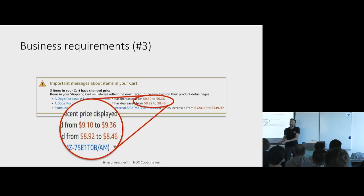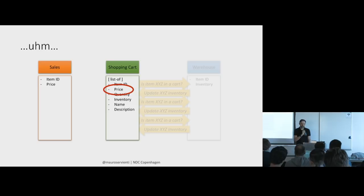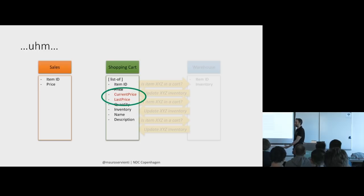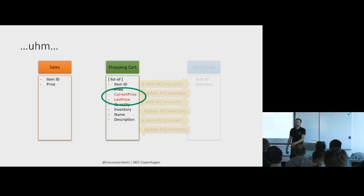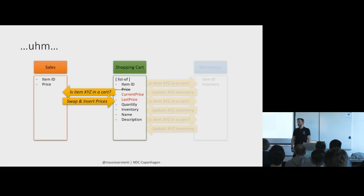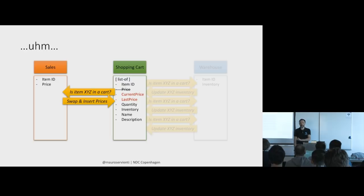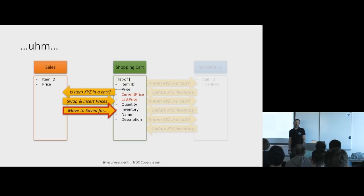Now price alone is not enough in the shopping cart anymore, because to show the difference we need to track it. So we need to change the shopping cart structure to have both a current price and a last price — representing the price when the item was added and the price now. So sales, whenever the price changes, needs to query shopping carts: do you have item ABC somewhere? If yes, please swap the prices, update the current one, move the old one to last price, and move the item to save for later. Sales is now dictating to someone else: please do this for me.